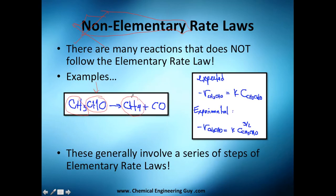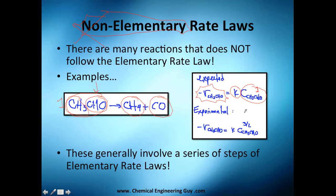Here's an example: CH₃CHO decomposes to methane and carbon monoxide. If it were elementary, the rate of reaction of CH₃CHO would be K times the concentration to the first power. However, experimental results show it's not to the first power but to the 1.5 (three-halves) power. That extra 0.5 exponent tells us it's non-elementary, so analyzing it purely from an elementary rate law perspective doesn't make sense.